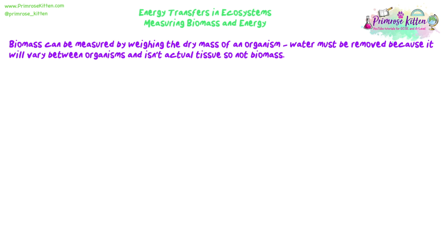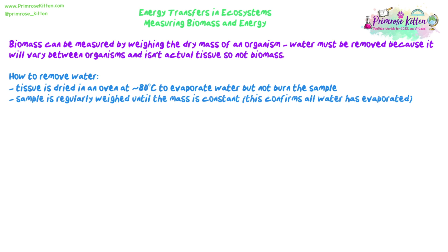Biomass can be measured by weighing the dry mass of an organism. It includes cell walls, cells, bones, hair — everything that's part of the tissue. We need to remove the water first, because water isn't biomass — the amount of water in organisms varies, and it's not something the organism has made using energy. So we dry the tissue in an oven at around 80 degrees — high enough to evaporate water quickly, but not high enough to burn the sample.